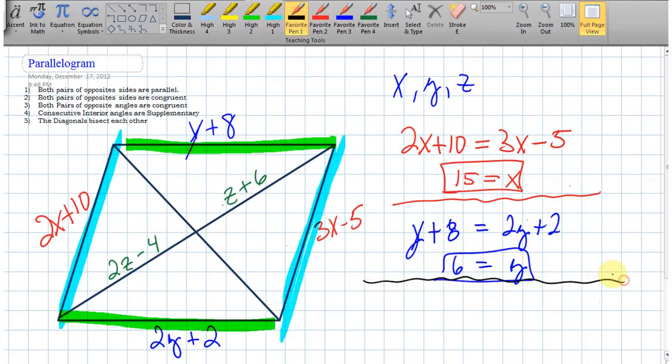And there's one more set of segments that are going to be equal. And what do we know? What property is this? Well, this is the diagonals bisect each other. So it turns out these two expressions here are going to be congruent as well. So I can write z plus 6 is equal to 2z minus 4. And if you're clever about finding z, it looks like z turns out to be 10.